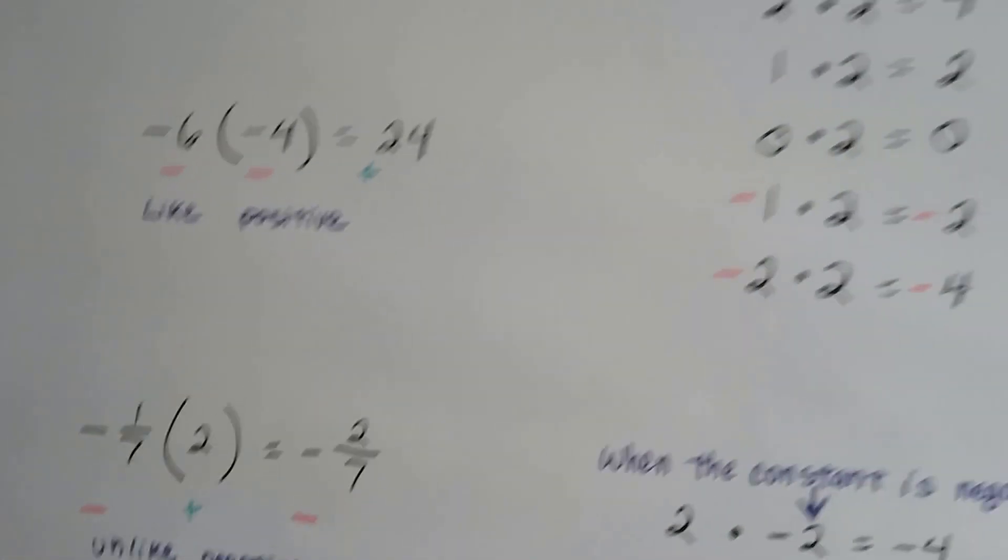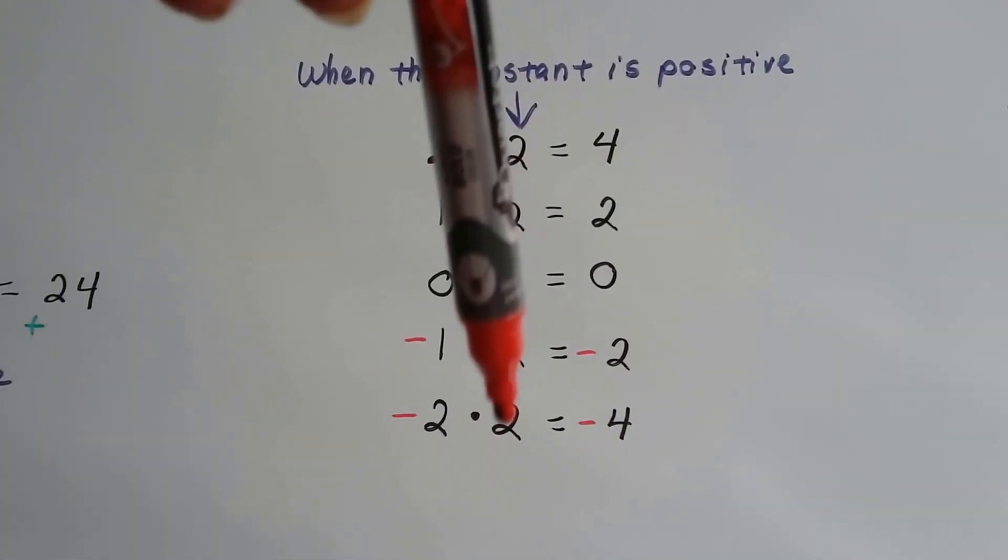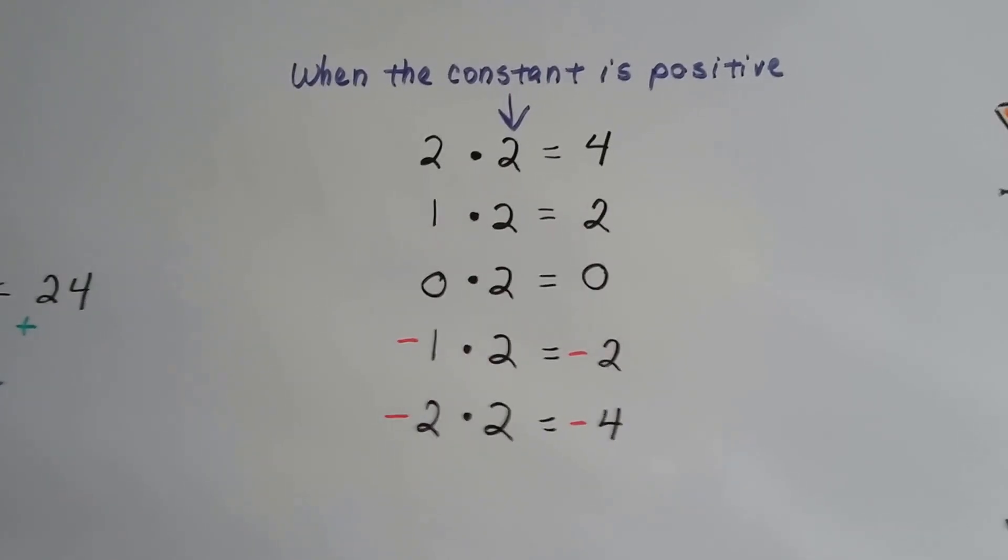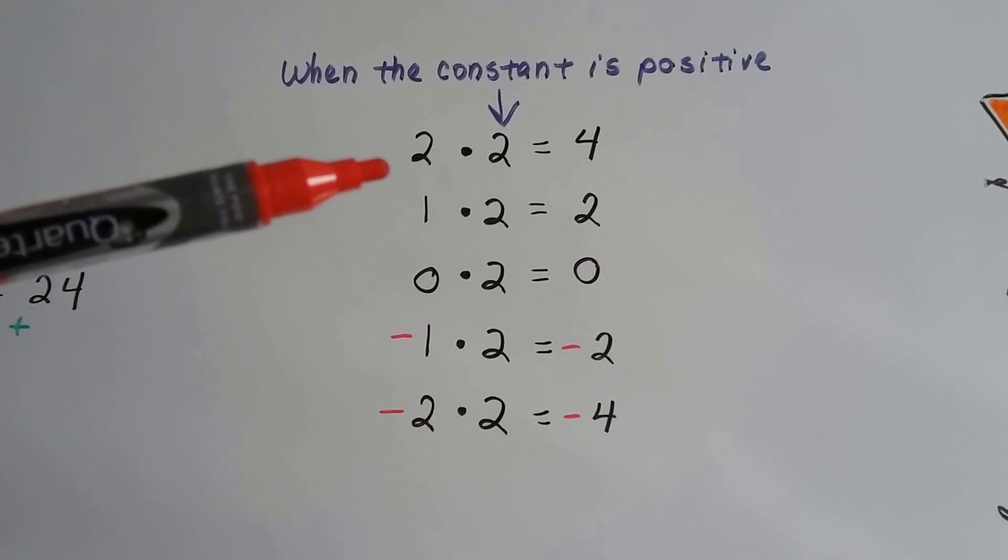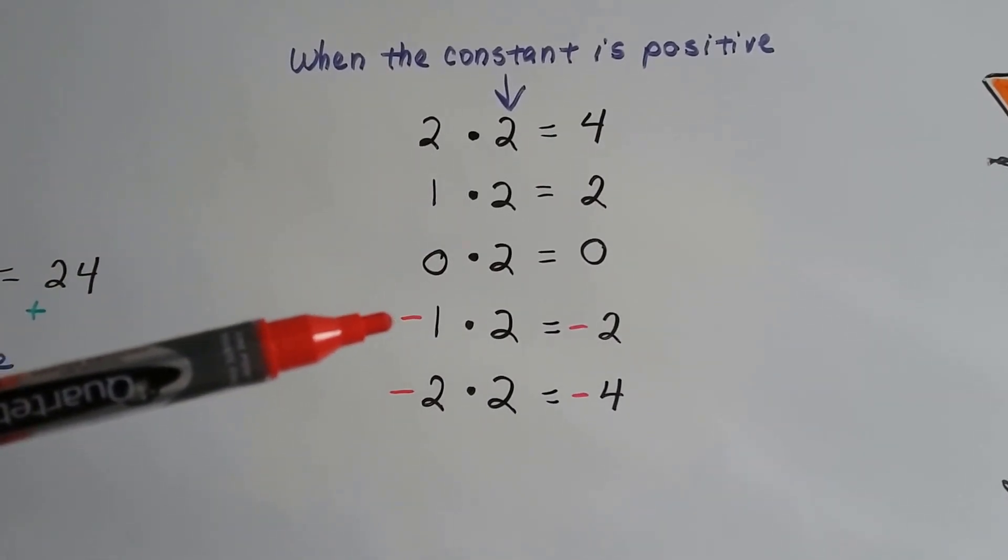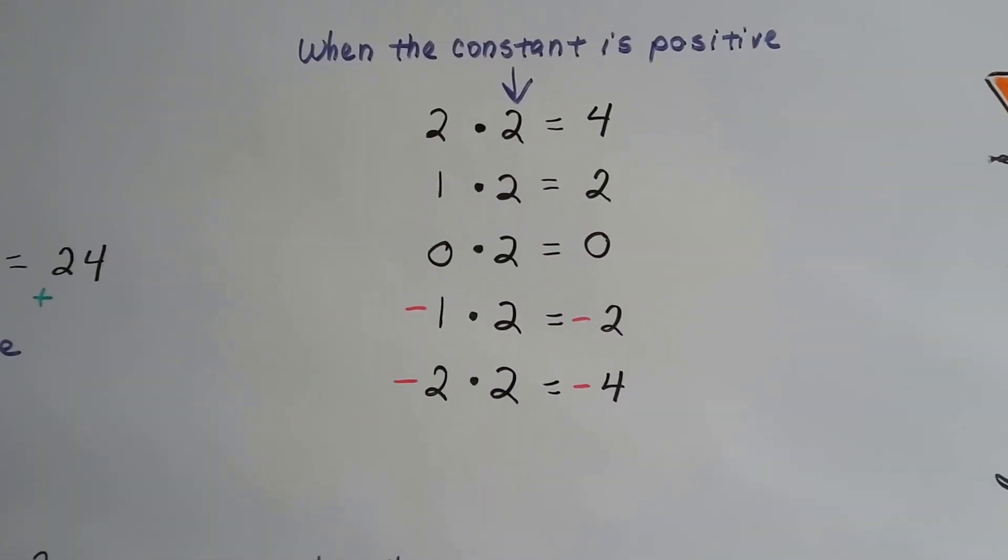Now take a look at what happens when the constant, this positive 2, is the constant. It's not changing. When we multiply it, you can see what happens. We go from positives and then when we get into negative 1 and negative 2, now our products are negatives.